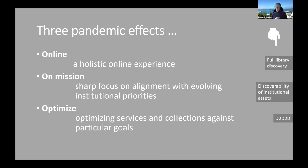I'm going to say a little bit about a discovery effect of those three pandemic effects: a little bit about full library discovery; a little bit about the discoverability of institutional assets in the context of a focus on research; and then under optimize, thinking about discovery to delivery — D2D — but suggesting that increasingly we're going to think about D2D in the context of decision support or dashboard. Increasingly, we're going to have data-driven decisions, thinking about how to optimize things in the context of usage data and traffic that suggests behaviors and choices. So: discovery to delivery to dashboard.